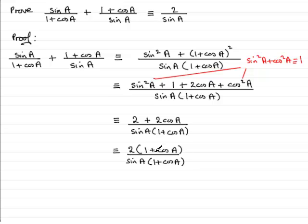And now we've got a common factor both on the top and the bottom. So we can divide top and bottom by 1 plus cos A, so they cancel themselves out. And what we've got is our final answer, 2 over sin A. So we've been able to prove it. So just put that down neatly here, 2 over sin A.